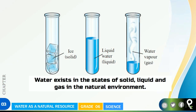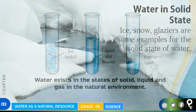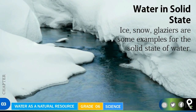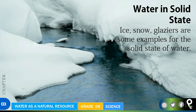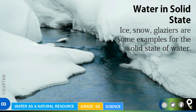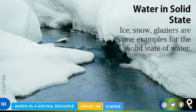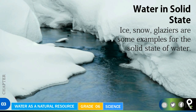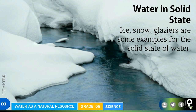We already know that water exists in the states of solid, liquid, and gas in the natural environment. We learned about it in our previous session. Water in the solid state — you can find water as ice, snow, and glaciers, which are some examples of the solid state of water.